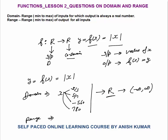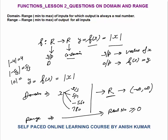What about the output — the range? In mod, every value is positive. For example, mod of minus 4 gives you 4. Mod of minus 5 by 3 gives you 5 by 3. So every negative value will give you a positive value. So can I say that range equals real numbers greater than or equal to 0? Because the minimum value of mod can be 0, which happens when you put x = 0 — then mod 0 = 0.